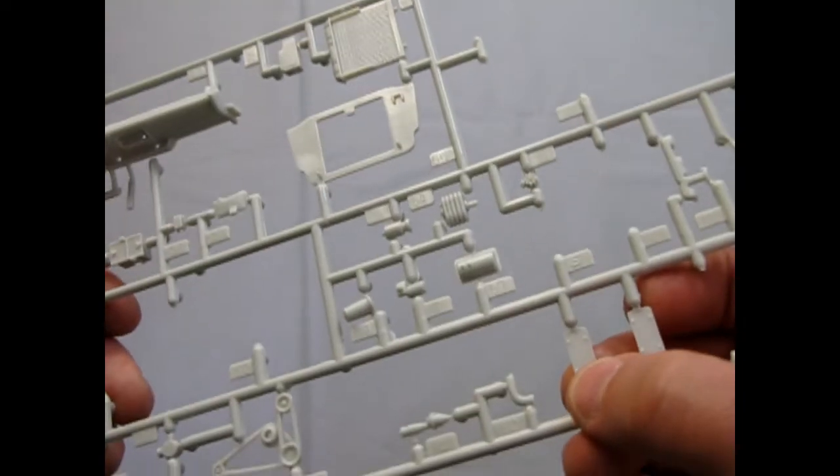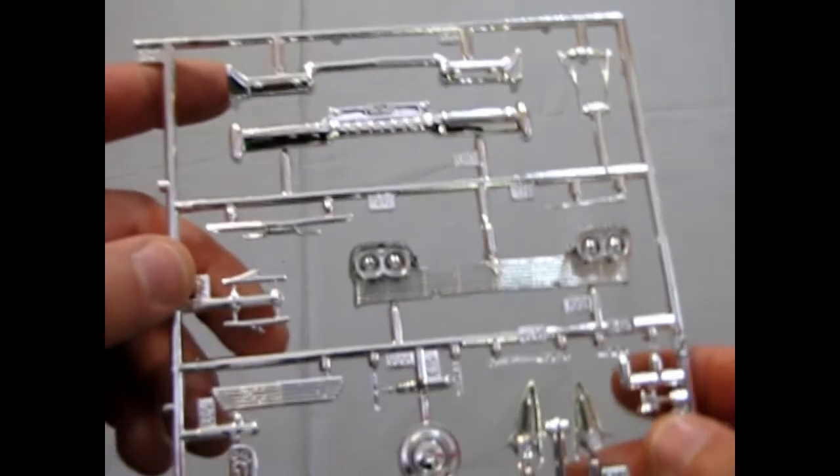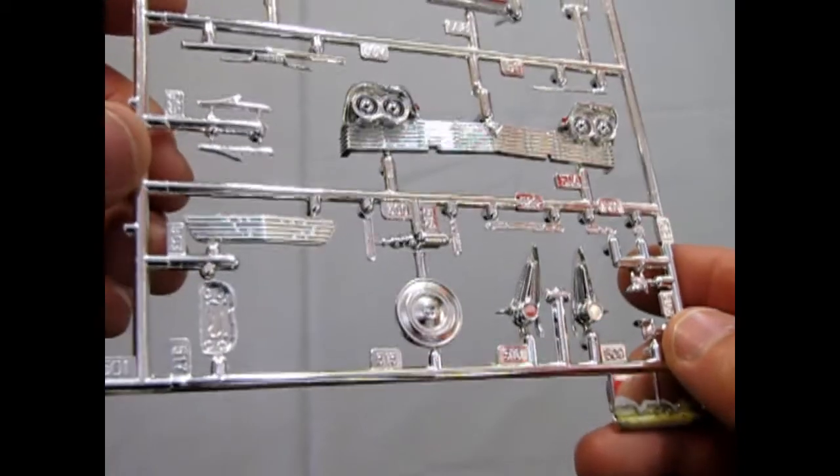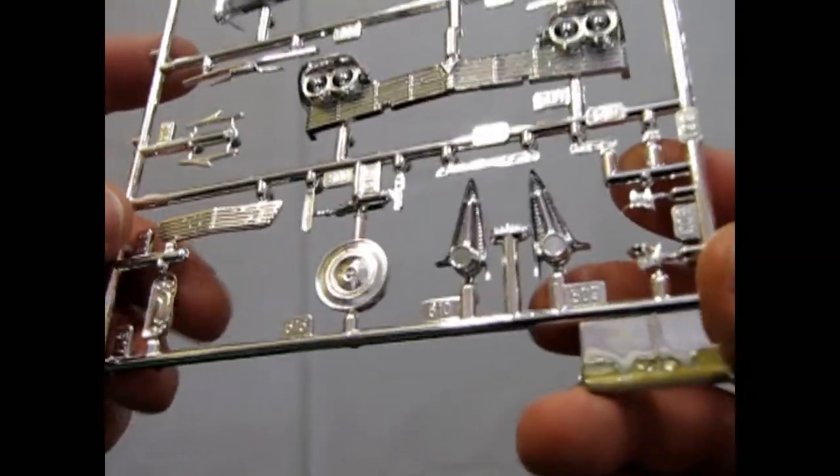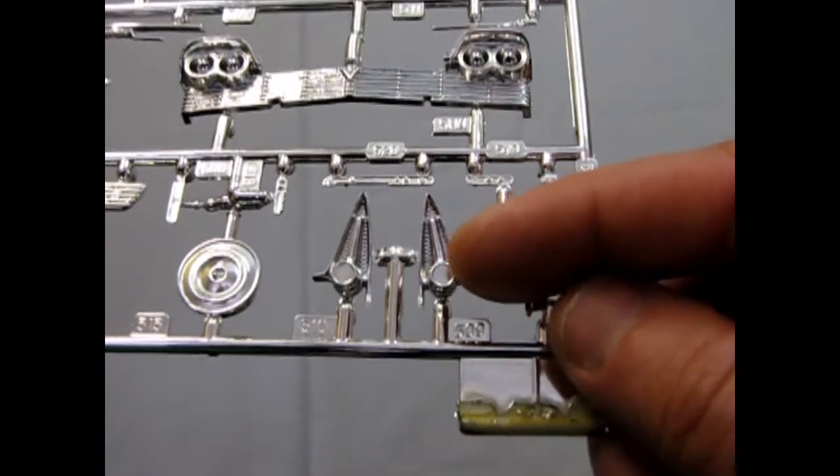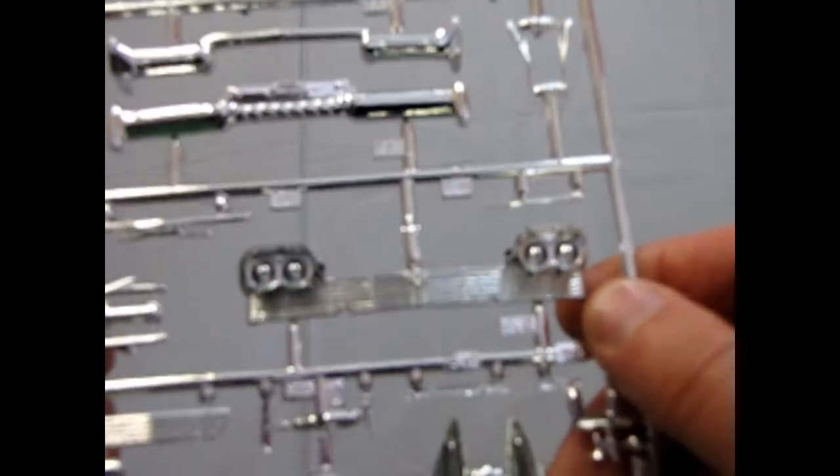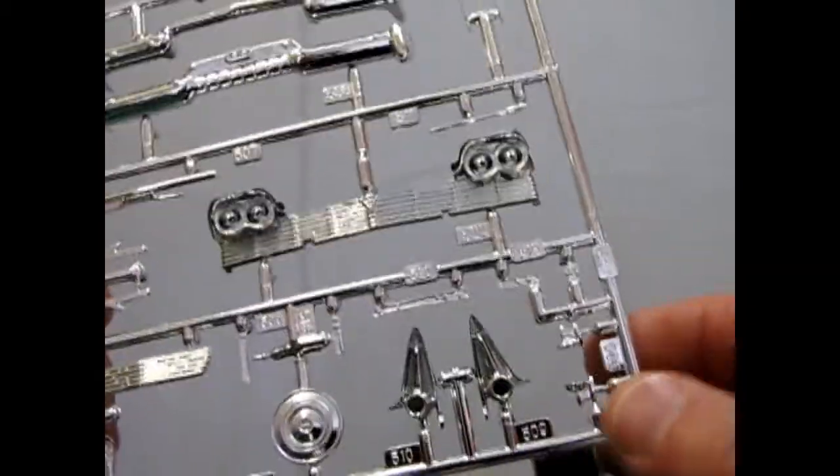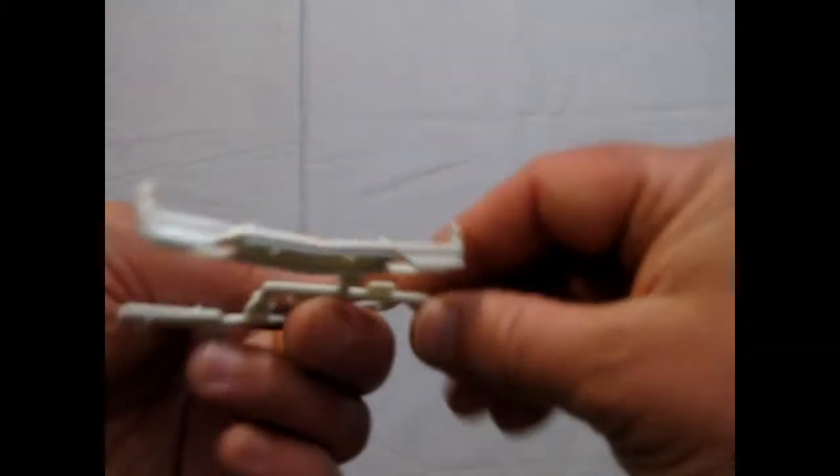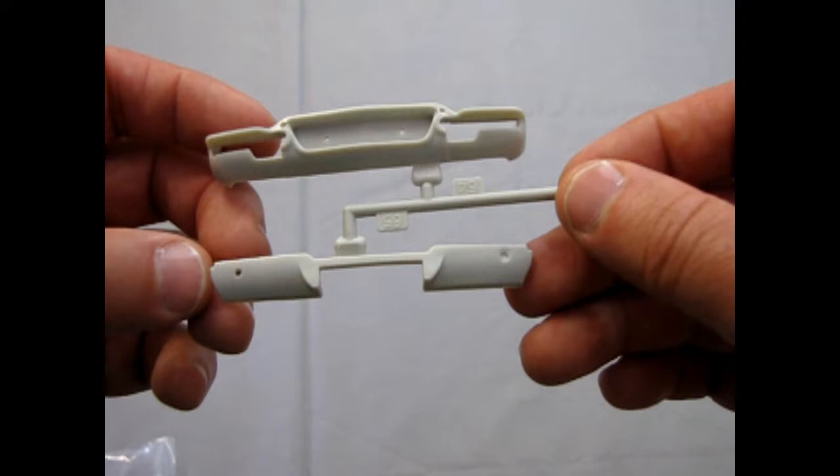And these are your license plates. There's the chrome parts tree. It's quite a lot of detail. You've got a chrome air cleaner there. A little detail in the tail light bezels. Those are very nice. There's your grill in the back.